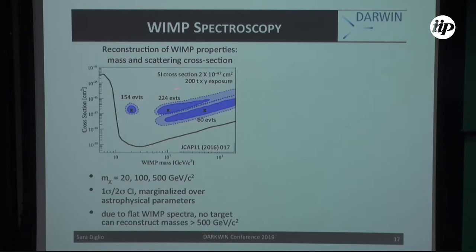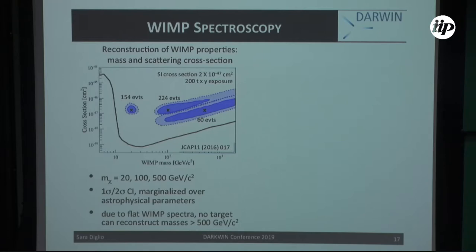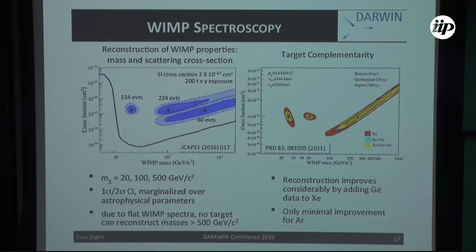In case of discovery, how well will we measure the properties of those WIMPs? Monte Carlo studies show that for a low WIMP mass around 20 GeV we will be capable of constraining both mass and cross-section. However, at higher masses the flat WIMP spectrum prevents a very precise measurement. Darwin is most sensitive in the low-mass region for spectroscopy. Combining Darwin or Xenon data with other target experiments such as Germanium or Argon significantly increases spectroscopy capabilities, producing a much smaller confidence ellipse.